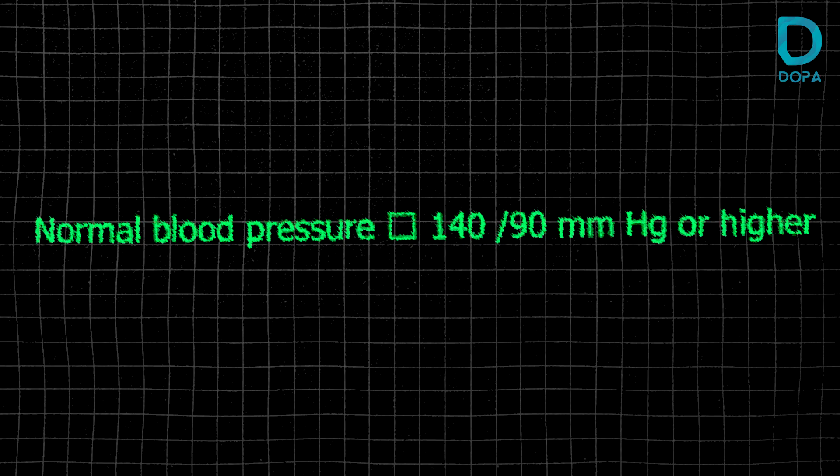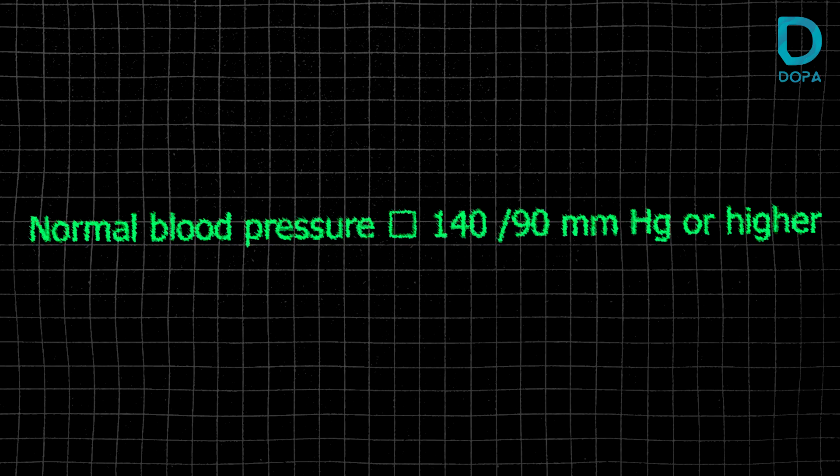Now, blood pressure: the normal blood pressure is 120 systolic and 80 diastolic. Systolic is when the heart contracts, and diastolic is when it relaxes. If the blood pressure is 140 systolic and 90 diastolic or above, we say the person has hypertension.